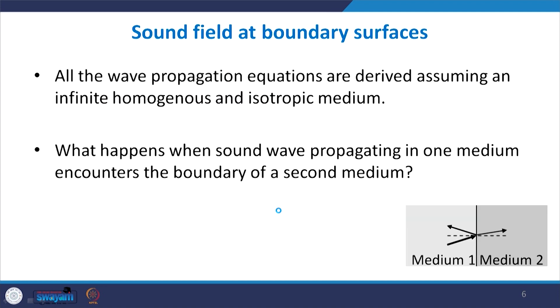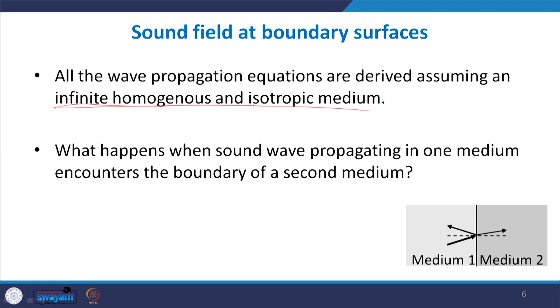Let us now begin our discussion of the sound field at boundary surfaces. In all the equations studied so far — the linear acoustic wave equation and the special cases of harmonic plane wave and spherical wave front — we assumed the medium is homogeneous, meaning the mean velocity is zero, no extra mass is added, density and bulk modulus do not change with time or space, and the speed of sound remains constant. We assumed an infinite, homogeneous, and isotropic medium.